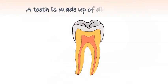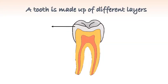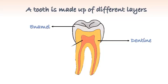A tooth is made up of different layers: enamel, dentine, and pulp.